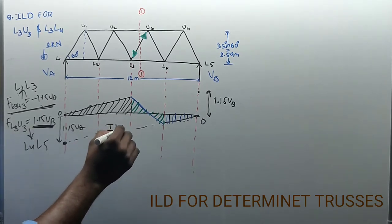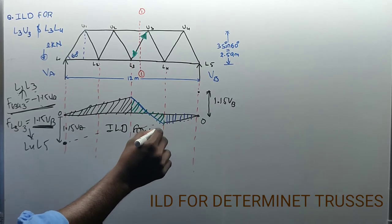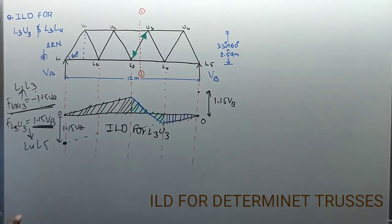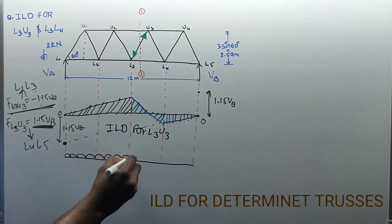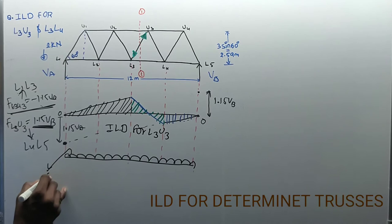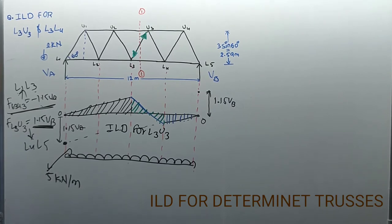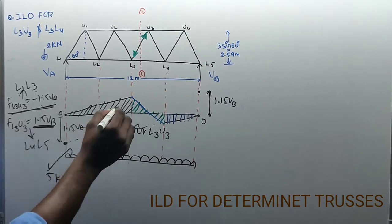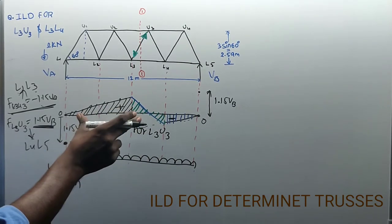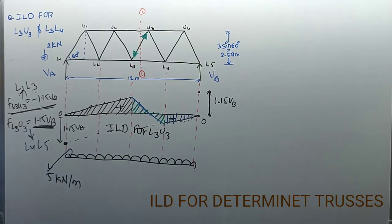Let's calculate one problem: ILD for L3U3. If this truss member has a dead load of 5 kN/m, he is asking us to calculate the total member force due to total dead load. To find this, take the positive area and negative area of the ILD, multiply by the load intensity, and that gives the value. This is the process we should follow.